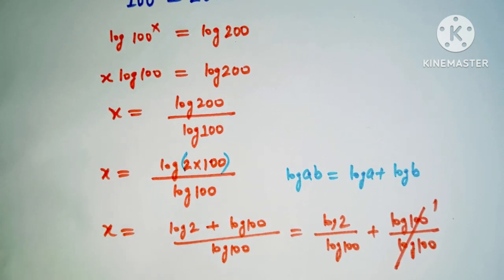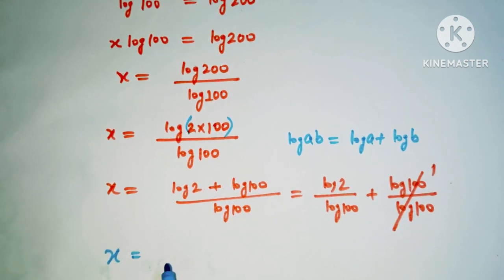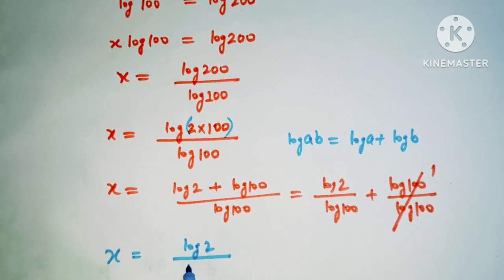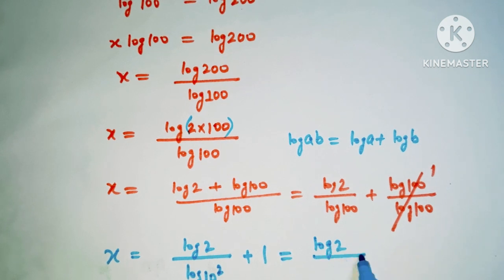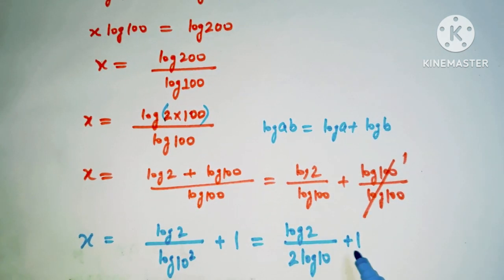So we can say that x is log 2 divided by log 10. This is log 2 divided by log 10. This 2 will come in front of here. So we have here, and we know that log 10 is 1.